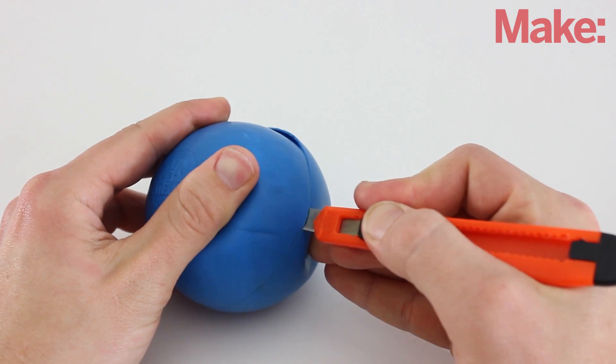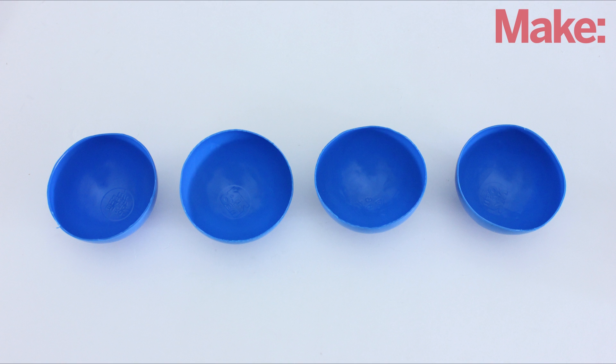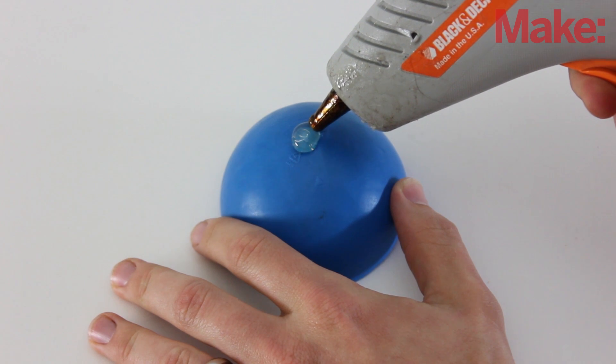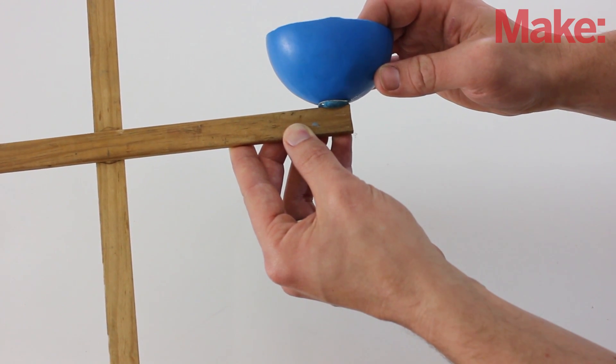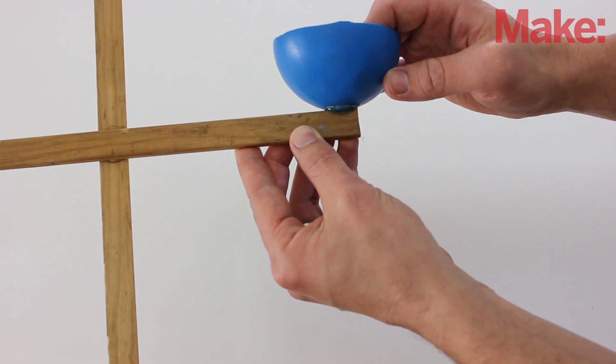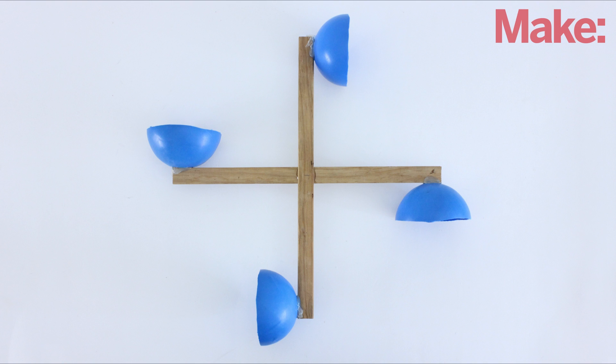Now take two plastic balls and cut them in half. This will give you four cups. Apply a large drop of hot glue to the back of one cup, attach this to the end of one arm of the X, wait for the glue to solidify, then repeat this with the other three cups.